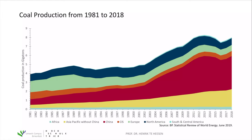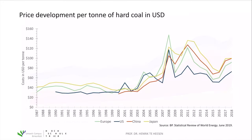Coal is a rather cheap energy source that can be mined relatively easily and is used in coal power plants all over the world. The price per ton of hard coal has increased significantly: in the 1980s and 1990s it was around $40 per ton, then increased due to rising demand particularly from China and Asia. At the moment, costs are about $100 per ton of hard coal.